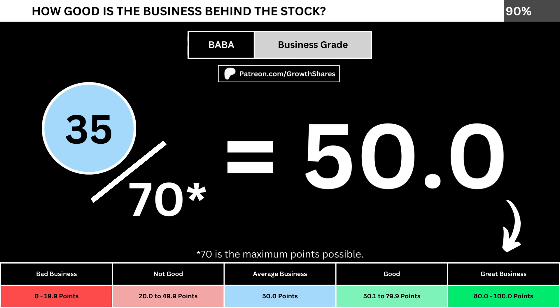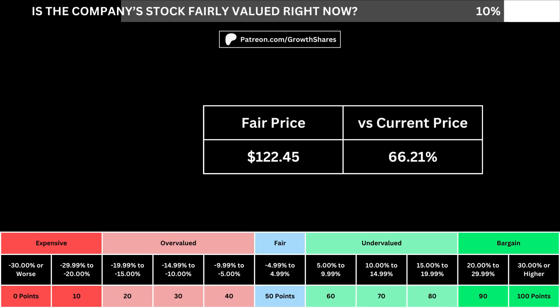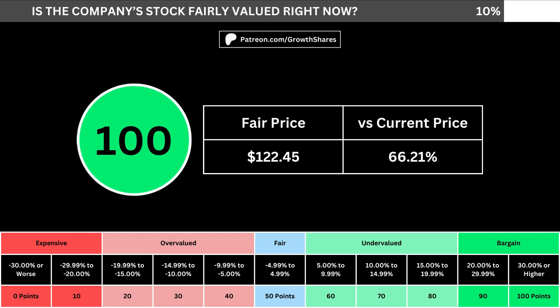We want the business grade to be above 50, meaning it has a better-than-average business. But of course, we can't forget about the fair price and whether it's the right time to buy the stock. I use a discounted cash flow model, taking into account a 10% margin of safety. That translates into the company's fair price and how many percentage points above or below its current price the stock is. When we compare those numbers with the table below, we can see where the company's stock lies in its intrinsic value spectrum right now.